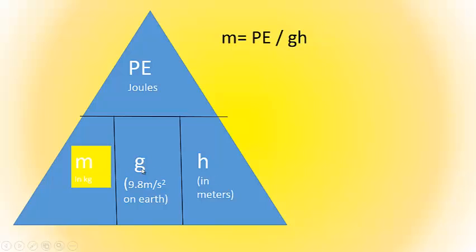If they're on the same level, we're going to multiply them. If they're on different levels, we are going to divide them. So, m equals PE divided by gh.